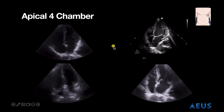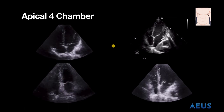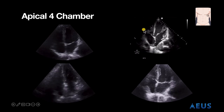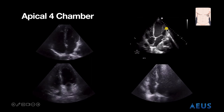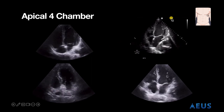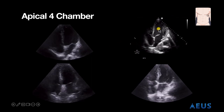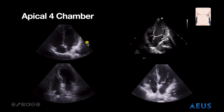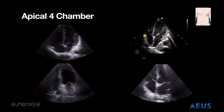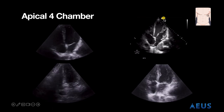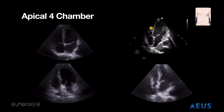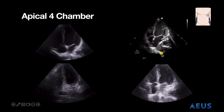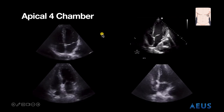Some of the Es we can assess in this view are effusion, which would be seen surrounding the heart; EF, looking at how well the left ventricle comes together during systole; and equality, assessing how big the right side is compared to the left side. The ratio should be 0.6 to 1 when it comes to right side to left side.